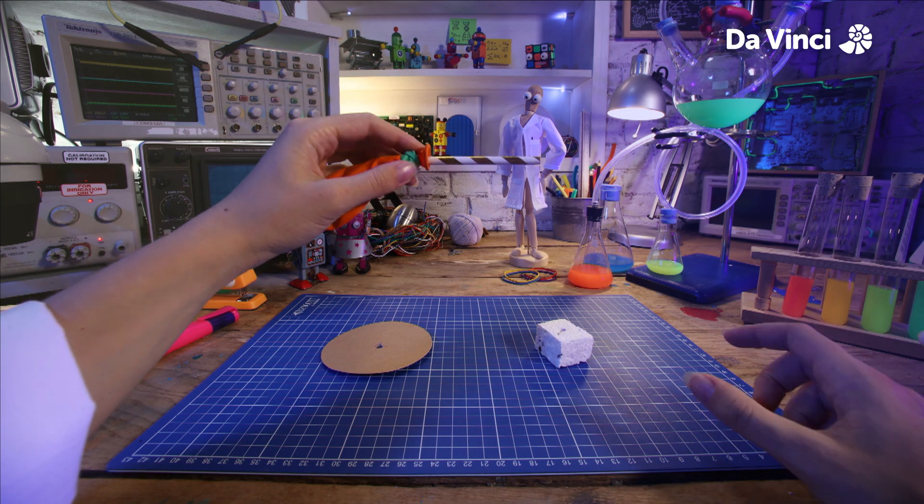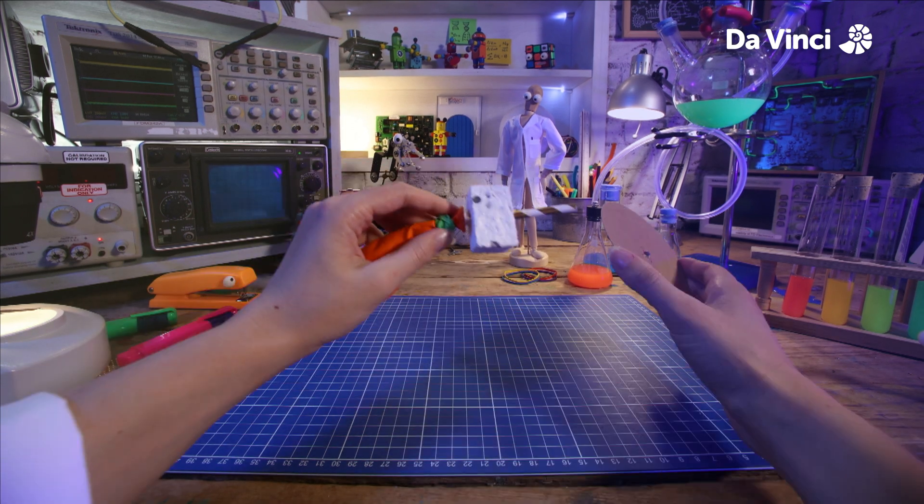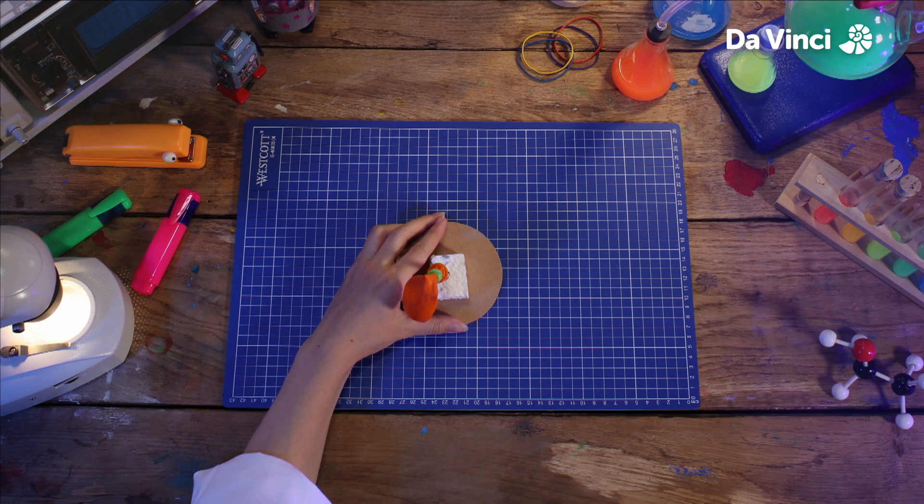Now we can take our straw and thread it through our styrofoam. And once more through the bottom of our card. Now that all of these pieces have assembled, we can tape them all together like this.